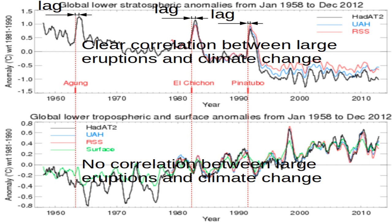And you see there is no real correlation in the troposphere on surface level — you don't see the temperatures dropping or peaking. But if you look at the upper graph, the temperatures are clearly peaking. So there is an eruption, there are little particles in the higher atmosphere, and temperatures are peaking.